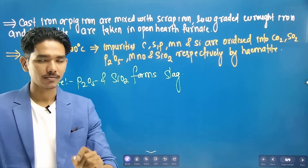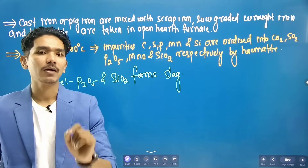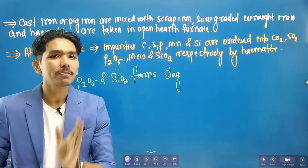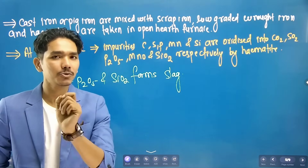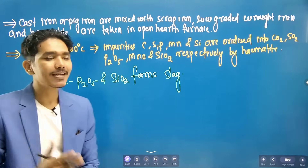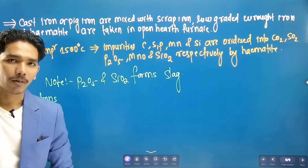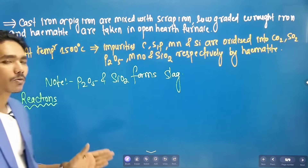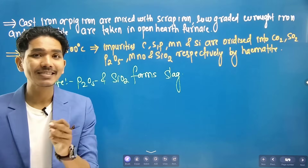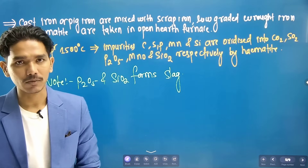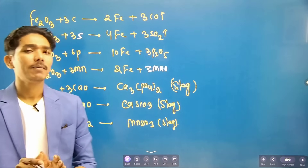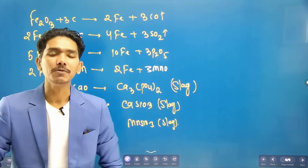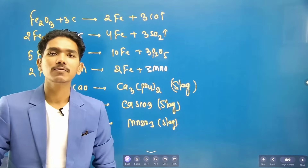The impurities present are carbon, sulfur, silica, and manganese. We use hematite through oxidation to oxidize these compounds. We can see that P2O5 and SiO2 are formed and these compounds are removed. We mix hematite ore with the impurities to oxidize them.